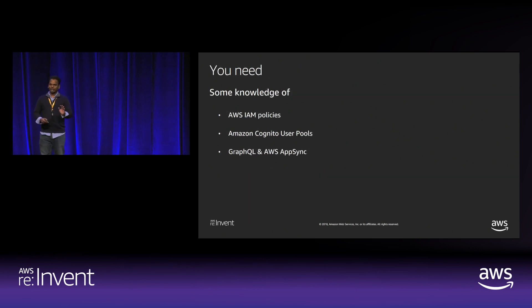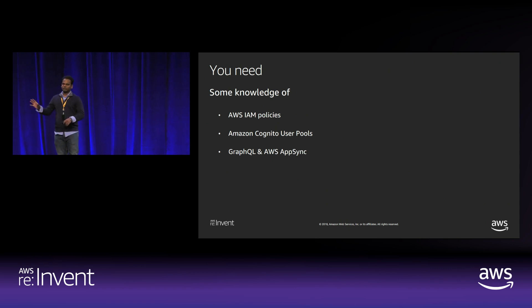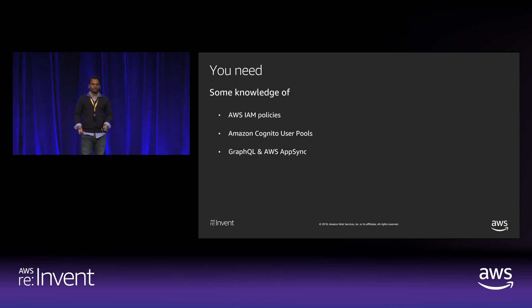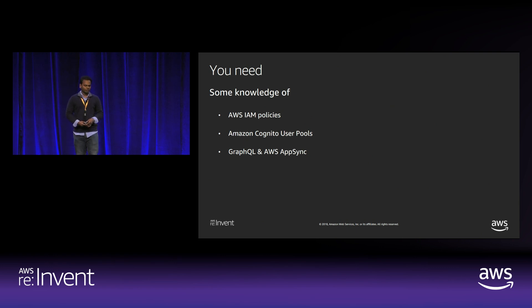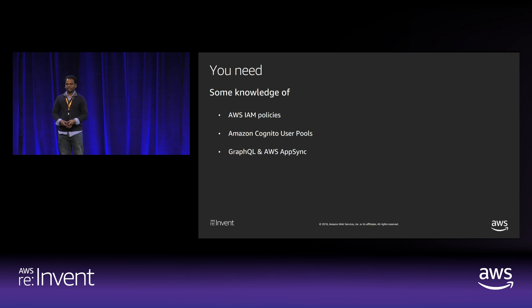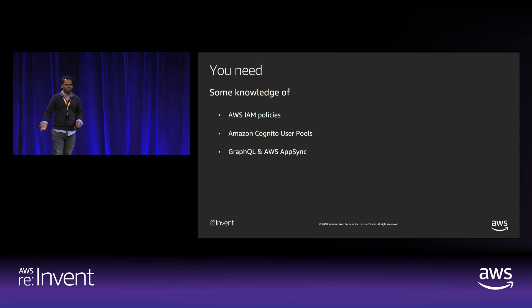You need some high-level knowledge of how IAM policies work. I'll talk a bit about Amazon Cognito User Pools — only a high-level understanding is required. For GraphQL, you need to know the type system to fully understand how to take advantage of both GraphQL and AppSync's authorization support, including AppSync primitives like data sources, resolvers, and schema structure. I'll be introducing topics as we go.